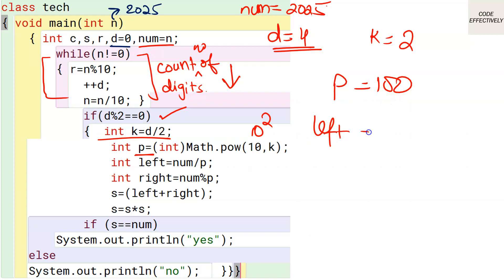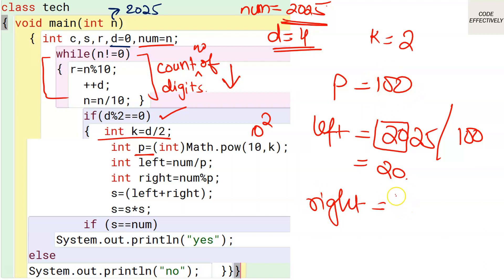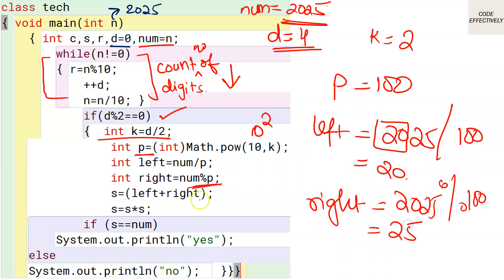Now, left = num / p, that is 2025 / 100 = 20 — the first 2 digits. For the right-hand side, right = num modulus p, that is 2025 % 100 = 25 — the last 2 digits. Then sum = left + right = 20 + 25 = 45.